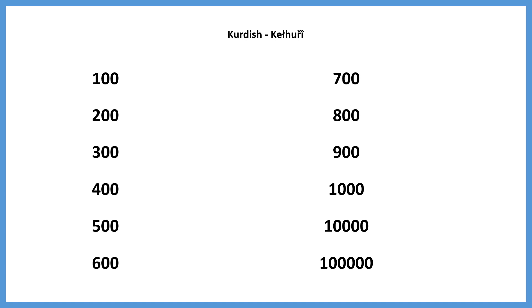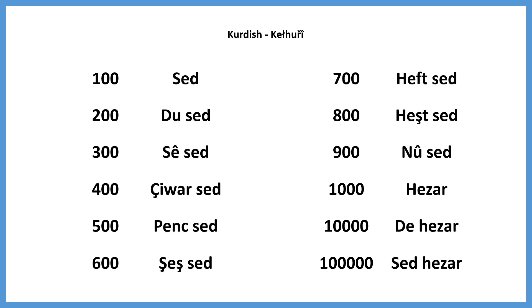We will now review the multiples of a hundred, and then the multiples of a thousand. You may pause the video here. The multiples of a hundred, starting from a hundred and ending with a thousand, are: sed, du sed, seh sed, chwar sed, penj sed, shesh sed, heft sed, hecht sed, nu sed, hezaar. Two thousand: du hezaar. Three thousand: se hezaar. Ten thousand: de hezaar. Hundred thousand: sed hezaar.